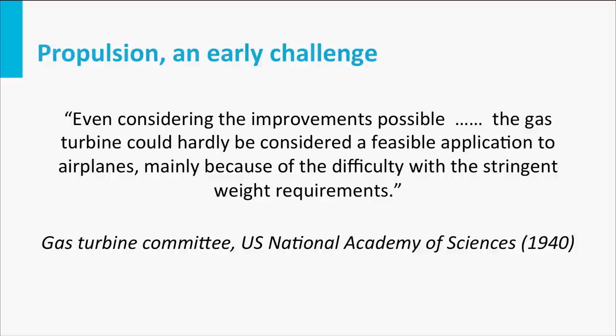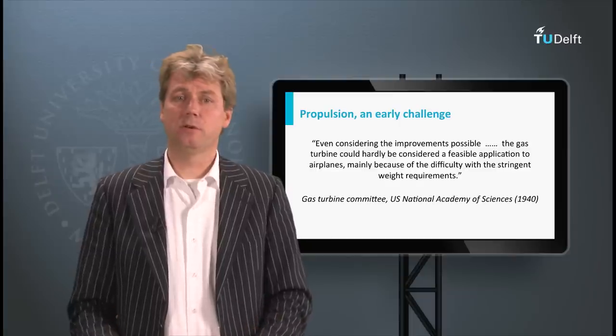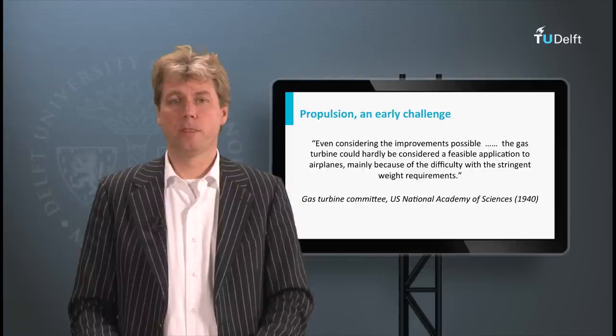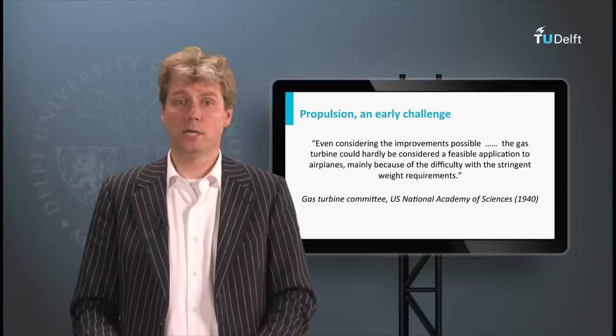Another pioneering age was the invention of the jet age. When the gas turbine was proposed, the US National Academy of Sciences had a gas turbine committee in which all experts on gas turbines were united — gas turbines were then mainly aimed at ground applications. When considering this for airplane propulsion, they made this remark: 'even considering the improvements possible, the gas turbine could hardly be considered a feasible application to airplanes, mainly because of the difficulty with the stringent weight requirements.' Be aware that every jet engine today on an airplane is a gas turbine, so these experts thought it was too heavy even with all improvements possible. They said this in 1940, yet it was two years earlier that there were already experiments with a jet engine on an aircraft in Germany.